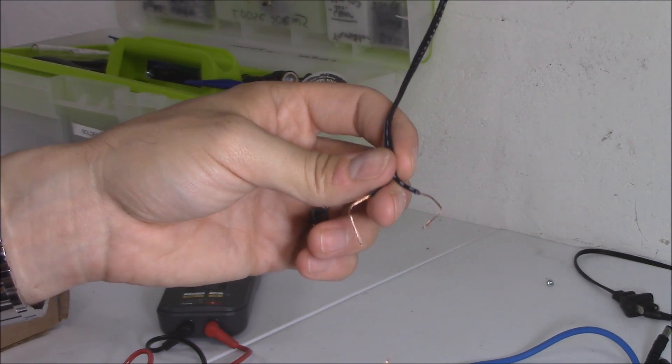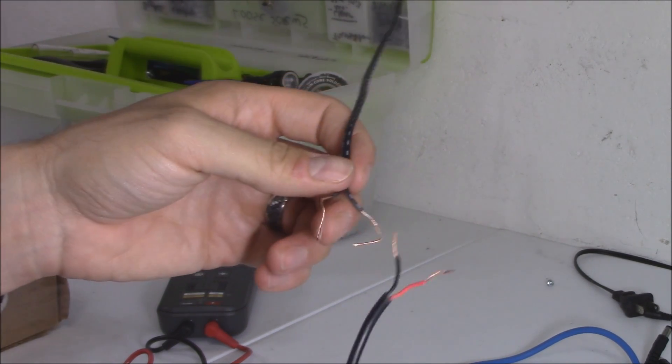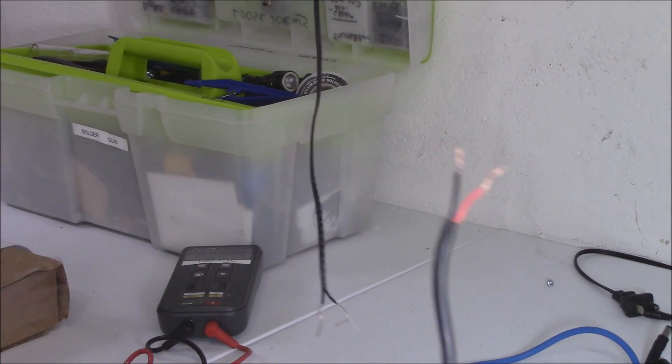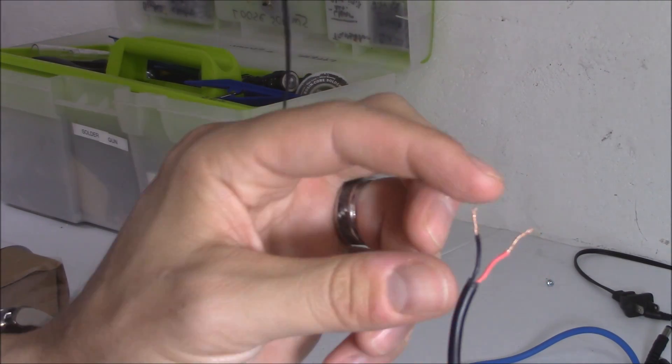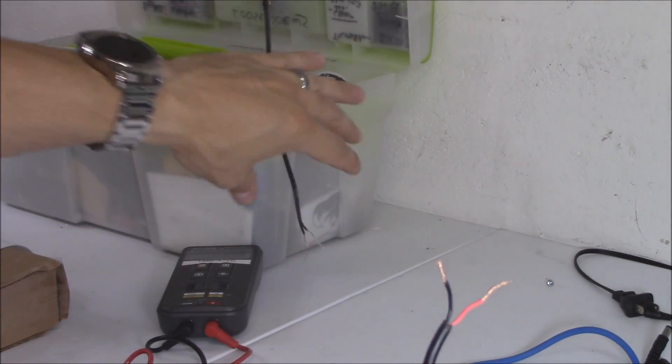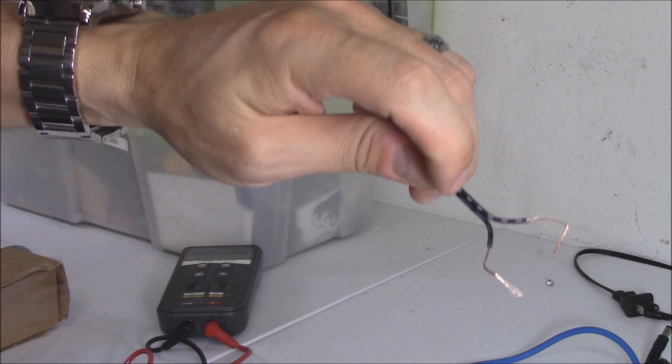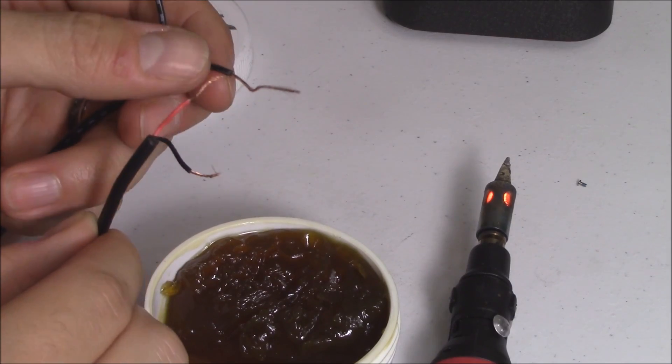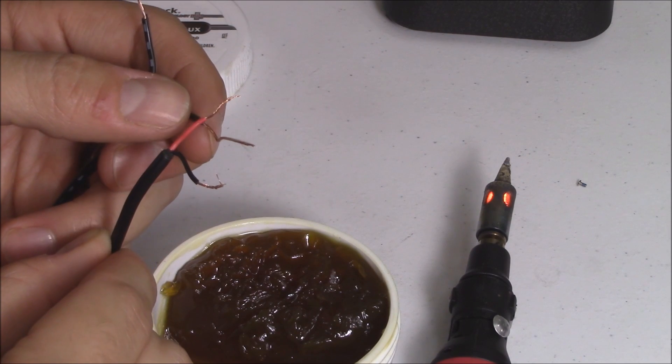And on this side where we got this cable, the red is positive and the black is going to be negative. So the only thing you have to do is just make sure you label the positive and negative on this side.